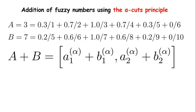These are the two fuzzy numbers called A and B, and we need to add these two using the alpha-cuts principle. The alpha-cuts principle is actually the sum of intervals between different curve alphas.